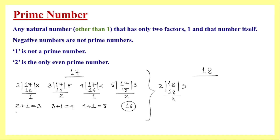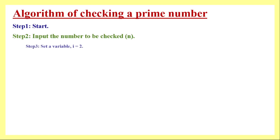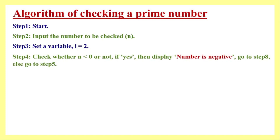In the algorithm, flowchart, or program, to represent the divisor that starts from 2 and increases by 1 each step, we take a variable i and set its initial value to 2. In every step, if needed, we increase i by 1. Now we will implement this logic through our algorithm, followed by a flowchart. The first step in our algorithm is Start, then we input the number we want to check.